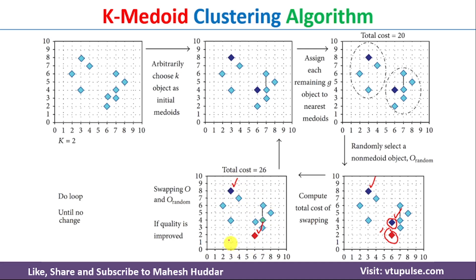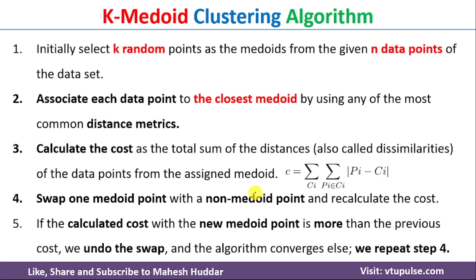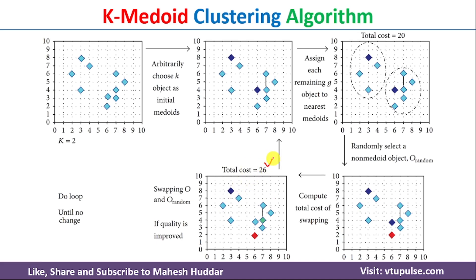With the new Medoid points, we repeat the process: calculate the distance from each Medoid to all data points, form new clusters, and recalculate the total cost using the same equation — summation of CI, summation of PI belonging to CI, |PI − CI|. The new total cost comes out to be 26. Since the new cost of 26 is higher than the previous cost of 20, swapping the Medoid was not beneficial, so we should not replace the existing Medoid with the new one.